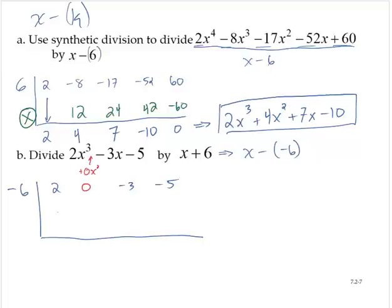And again, we start the process. We drop down the 2, and we multiply and add. 2 times negative 6 is negative 12. 0 plus negative 12 is negative 12.